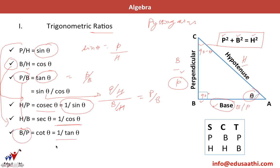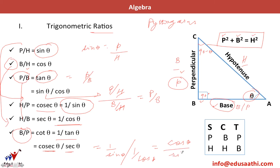Cot theta can also be written as 1 by tan theta, or as cosecant theta divided by secant theta. Working that out: cosecant theta is 1/sin theta and secant theta is 1/cos theta, so dividing gives cos theta divided by sin theta. This confirms cot theta is the reciprocal of tan theta.